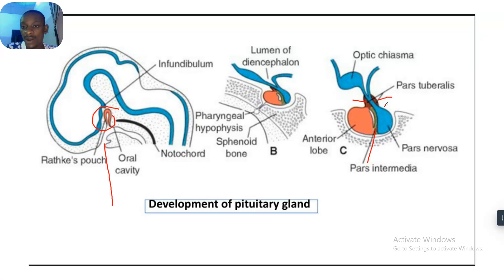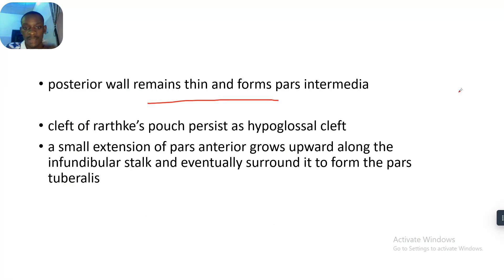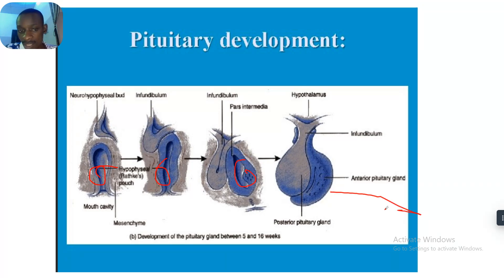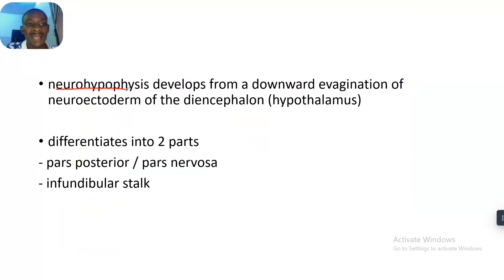This extension grows around the infundibular stalk, forming the pars tuberalis. Here is another image showing the development — you can see Rathke's pouch as an invagination, developing and growing out to become the anterior pituitary gland. As for the neurohypophysis — the posterior pituitary gland — it develops from a downward invagination of the neuroectoderm of the diencephalon, which is the hypothalamus.